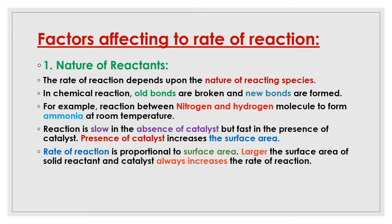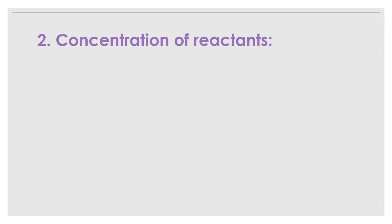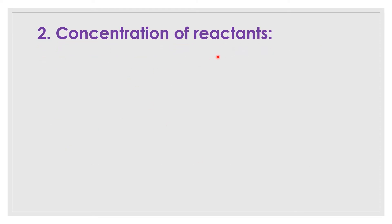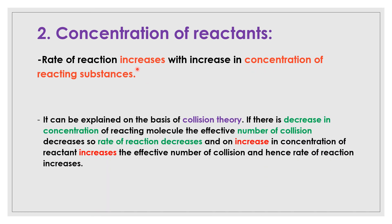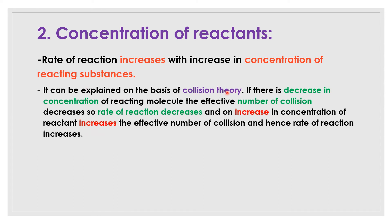Now the second factor is concentration of reactant. The rate of reaction increases with an increase in the concentration of the reacting substance. If there are two or three reacting substances, as you increase the concentration of a particular reactant, the rate of reaction also increases. This can be explained on the basis of collision theory, which we will see in detail in the next point.